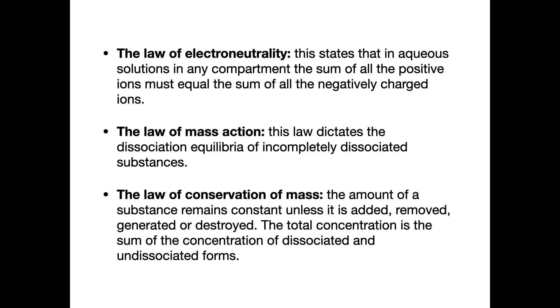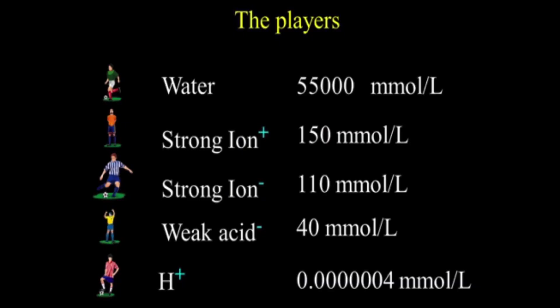The major players in Stewart's interpretation are water, which is most important as it comprises 60–70% of our body, followed by strong ions — cations and anions — and finally weak acids. The hydrogen ion concentration is almost 10 to the power of 9 times less than that of strong ions. Believing that hydrogen ions are controlling the internal milieu does not fully explain the actual chemistry going on inside the body.